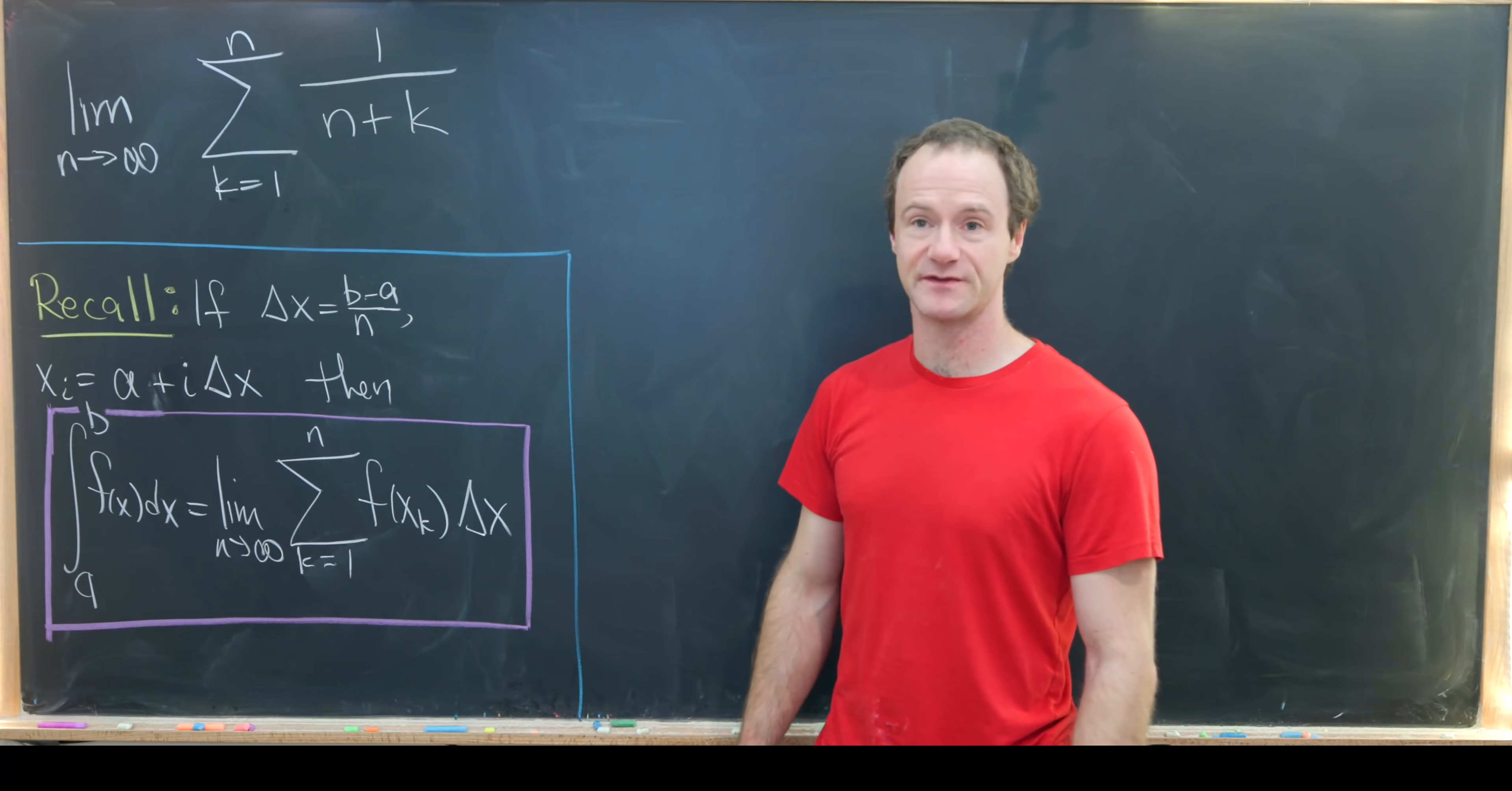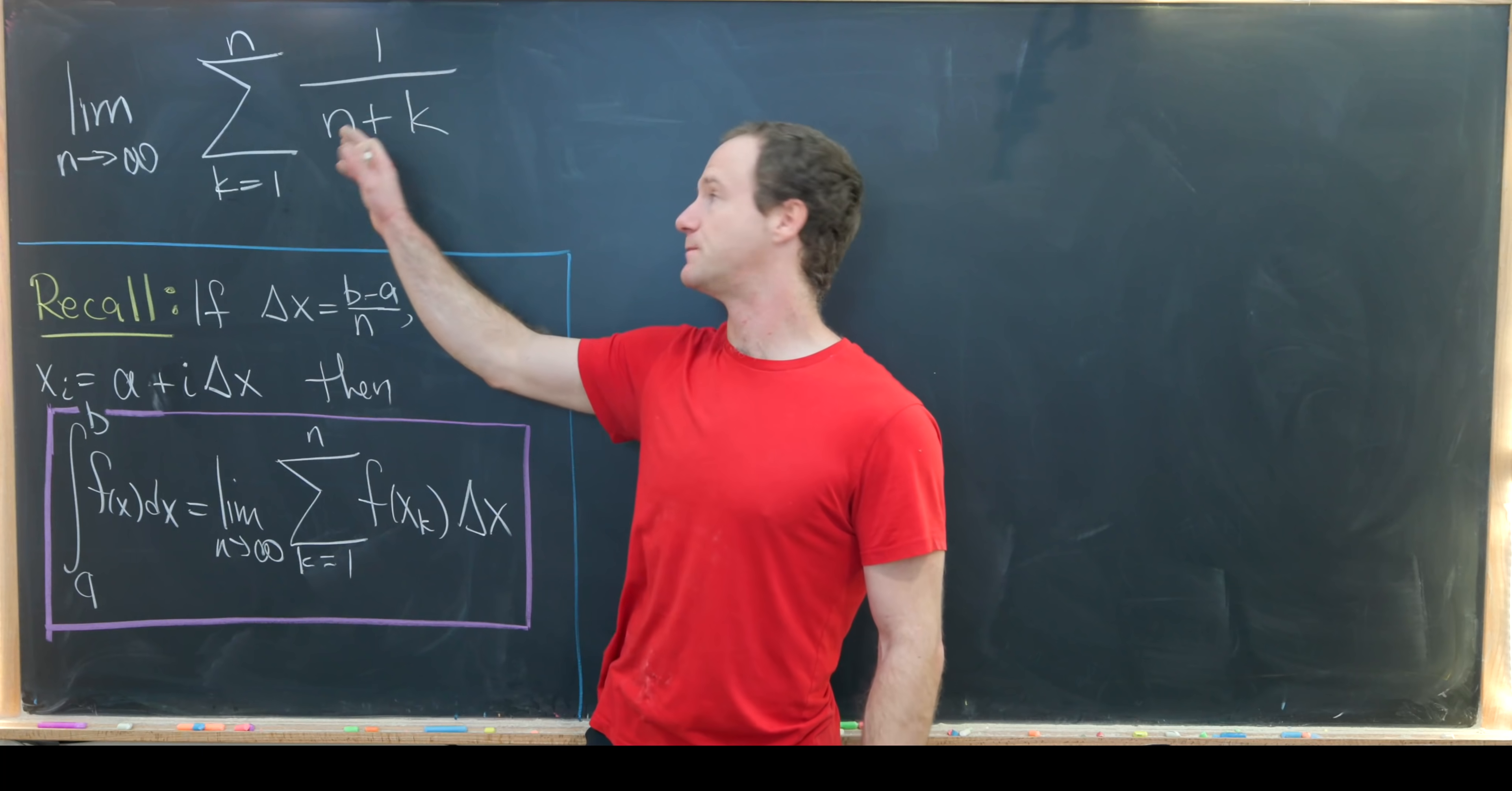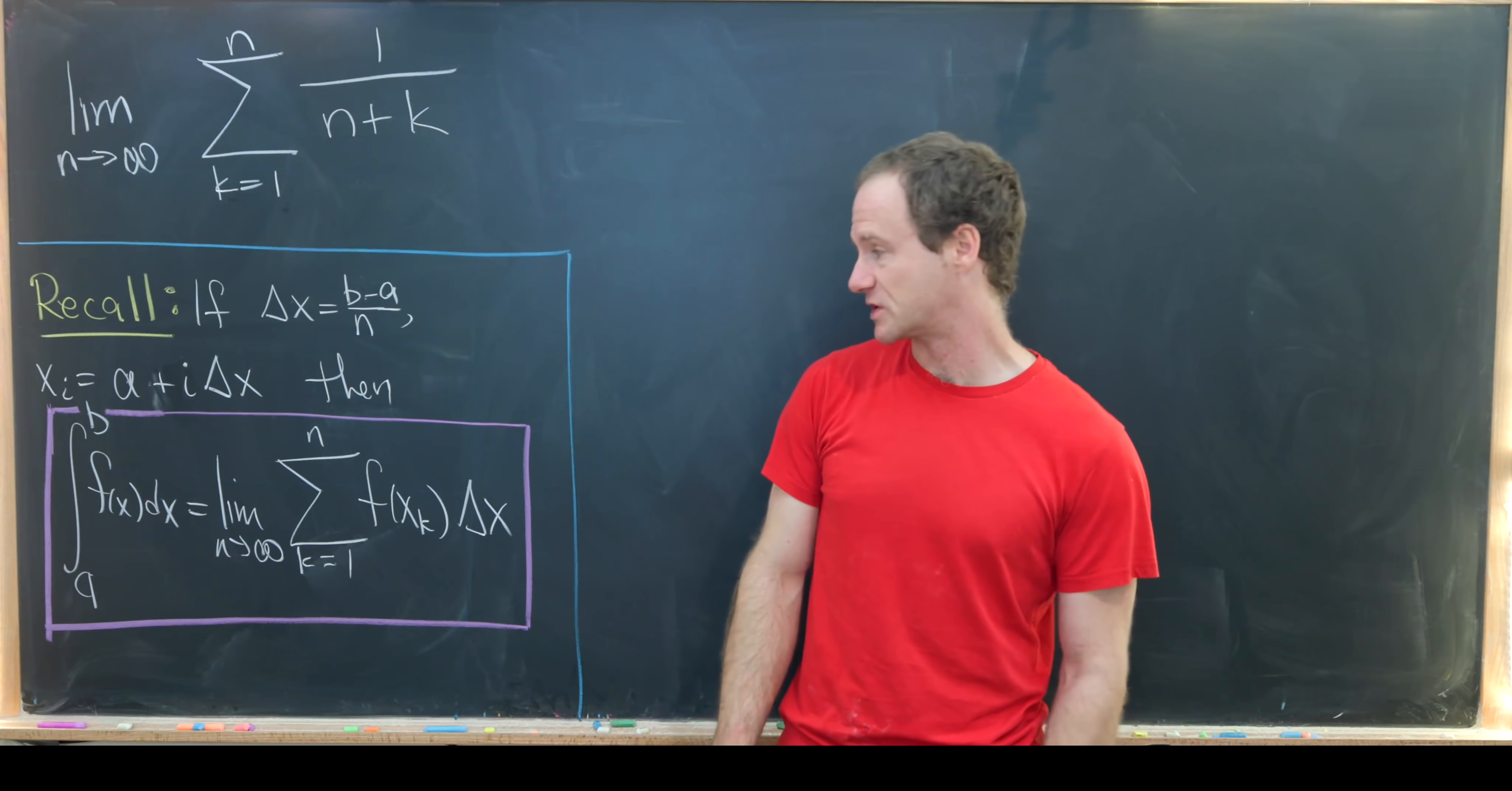Anytime you've got this kind of setup where you're indexing your sum with one index, in this case k, and the upper limit of that sum is the variable of your limit, and then the stuff inside of the sum depends on the index of the sum and the variable of the limit, it's a good chance that some trick like this will work. That trick is to recognize that this is the limit of a Riemann sum of a particular function.